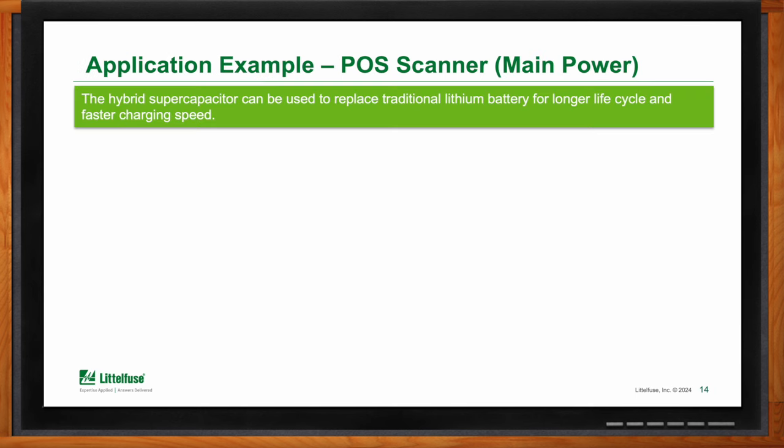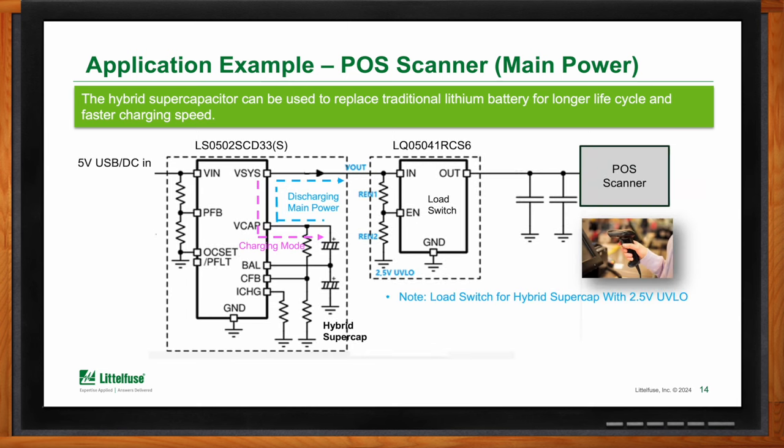Let's look at a few application examples. First, a POS (point-of-sale) scanner. They can be charged via USB cable, and the chip provides charge management for the capacitors. Once charged, you can disconnect the main incoming power and the POS scanner will be powered solely off the supercapacitors. Depending on whether it uses a regular or hybrid supercapacitor, a load switch may also be included in the path for extra power. All the functions — charging the supercaps, providing power, and protection — are provided in one package.